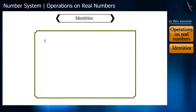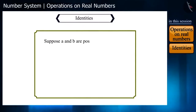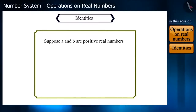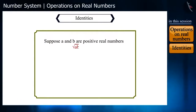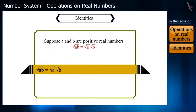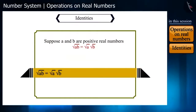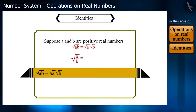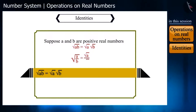If a and b are positive real numbers, then √(ab) = √a × √b. Similarly, √(a/b) = √a / √b.